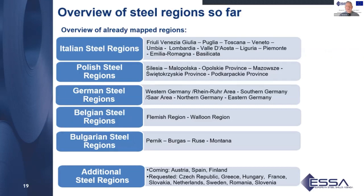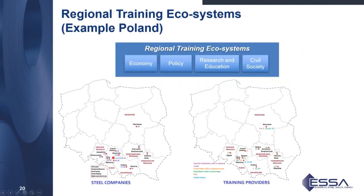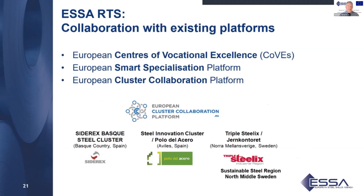We are mapping the steel regions. We have an overview in Italy, Poland, Germany, Belgium, and Bulgaria, and we are also in touch with additional steel regions from all over Europe. In Poland, for example, we will concentrate on the southeast area where all the steel companies and related training providers are placed, and we will collaborate with existing platforms — the European Centers of Vocational Excellence, smart specialization, and cluster collaboration.